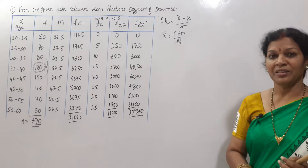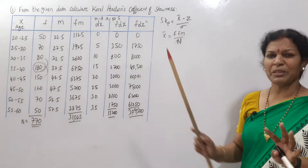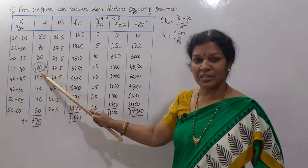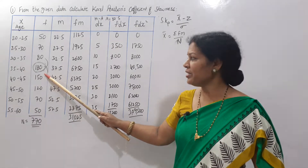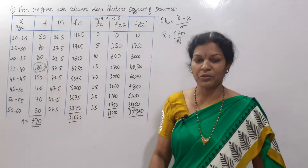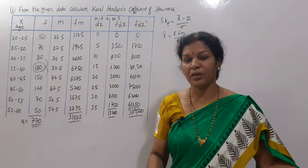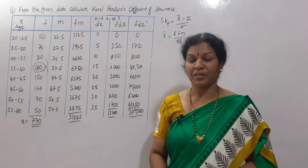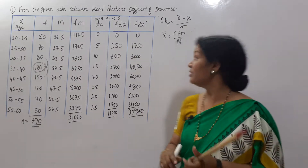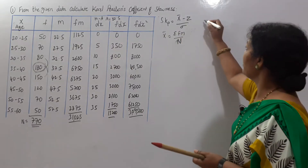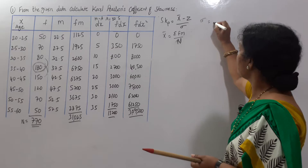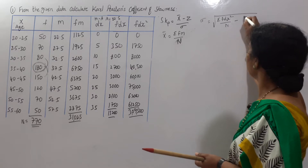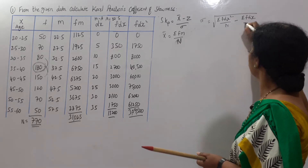Next, we find Z (mode). We don't need a special column for Z. The highest frequency is 180 and the next highest is 150. By inspection, we identify the modal class interval. Then we take the standard deviation formula: σ = √(σfdx² / n − (σfdx / n)²).